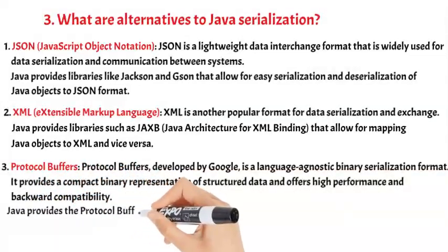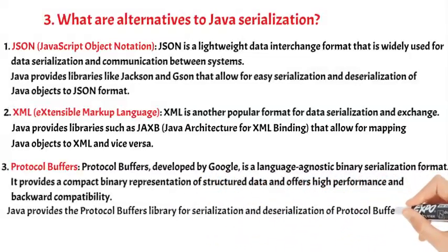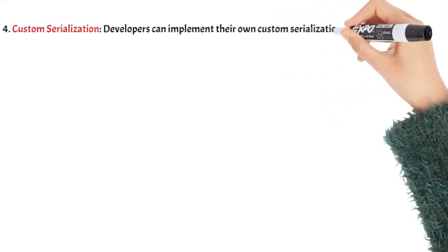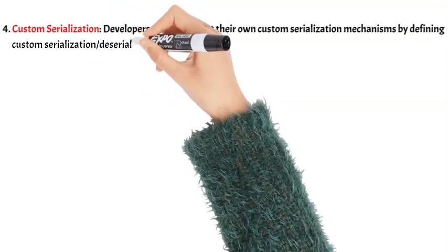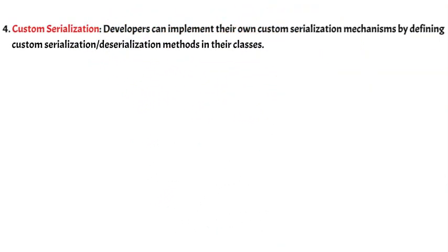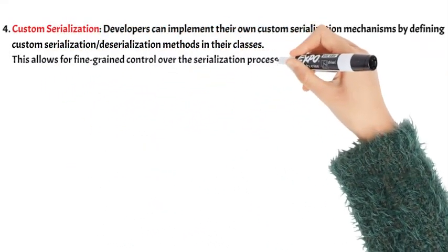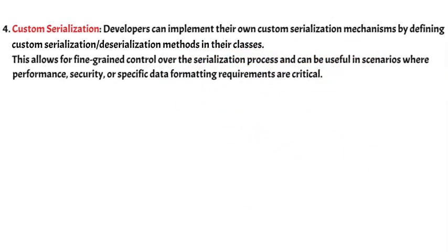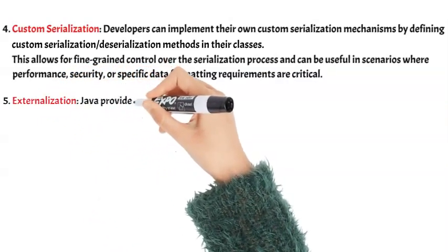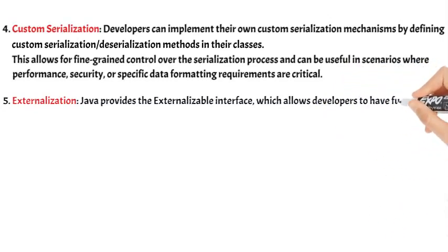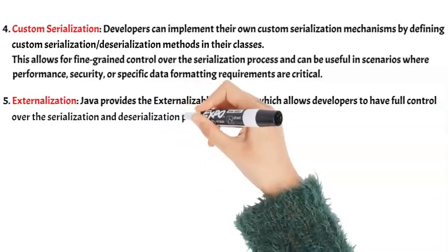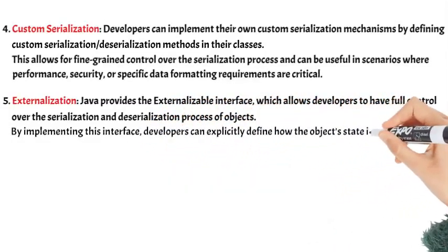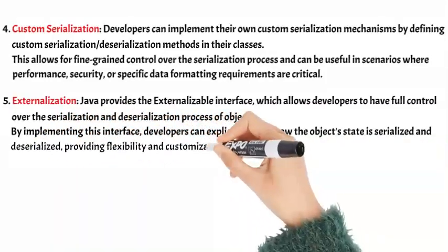Java provides the Protocol Buffers library for serialization and deserialization of Protocol Buffers messages. Custom Serialization: Developers can implement their own custom serialization mechanisms by defining custom serialization and deserialization methods in their classes. This allows for fine-grained control over the serialization process and can be useful in scenarios where performance, security, or specific data formatting requirements are critical. Externalization: Java provides the Externalizable interface, which allows developers to have full control over the serialization and deserialization process of objects. By implementing this interface, developers can explicitly define how the object's state is serialized and deserialized, providing flexibility and customization options.